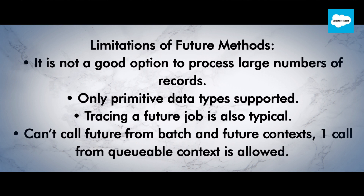Limitations of future methods: 1. It is not a good option to process large numbers of records. 2. Only primitive data types are supported. 3. Tracing a future job is also difficult. 4. You can't call a future method from batch and future contexts, though one call from a queueable context is allowed.